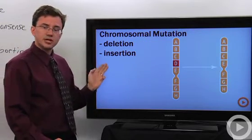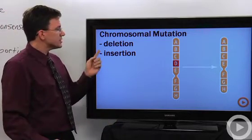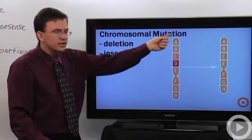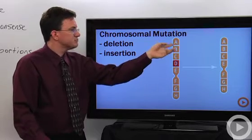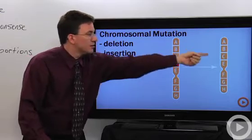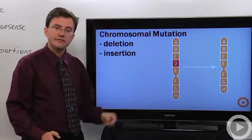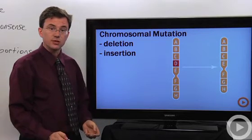Now chromosomal mutations, as I said, are talking about changing the entire chromosome. Here's an example of a deletion or insertion. Here's a chromosome with my genes ABCD and so on. If I delete gene D, then the chromosome has been altered and then the cell loses the effect of whatever that D gene was.